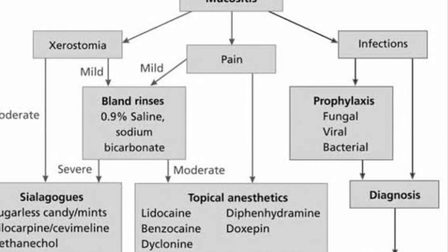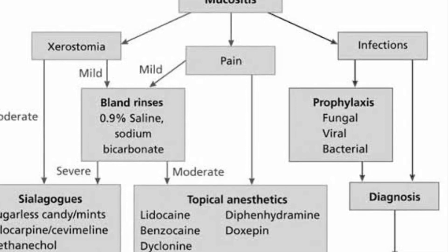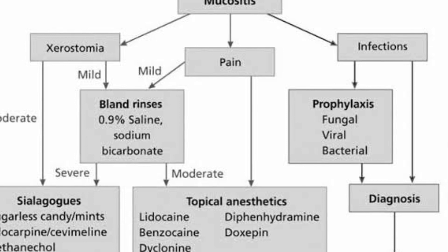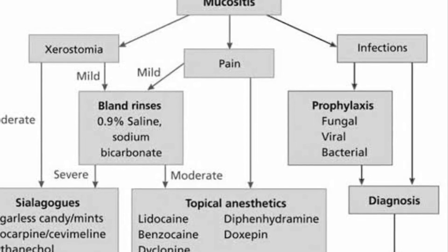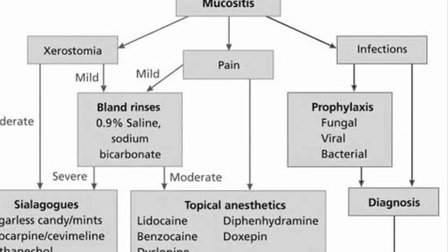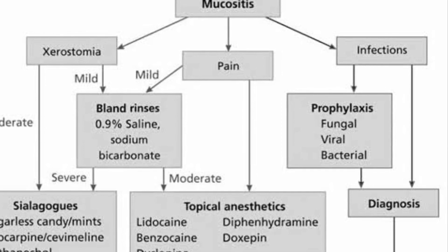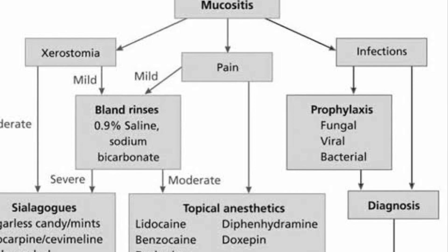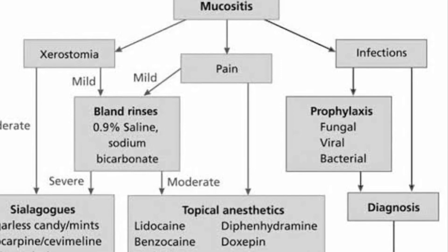For dry mouth, give sips of water, saline gargles, chewing gums, and cholinergic agents to prevent dryness of the mouth. Fifth, management of bleeding — if there is any systemic or local cause of bleeding, the bleeding cause of mucositis must be addressed.